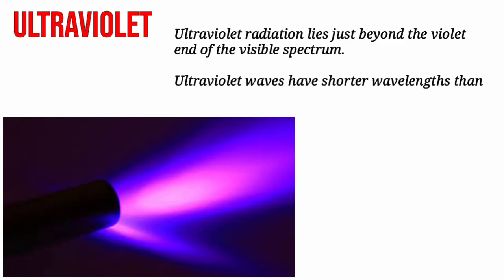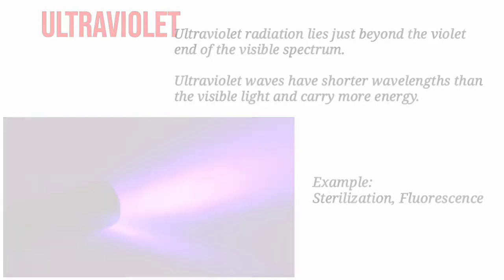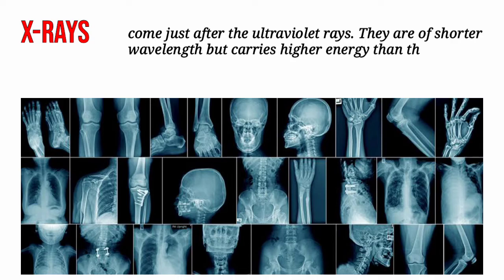The ultraviolet radiation lies just beyond the violet end of the visible spectrum. Ultraviolet waves have shorter wavelengths than the visible light and carry more energy. X-rays come just after the ultraviolet rays. They are of shorter wavelengths but carry higher energy than the UV radiation.